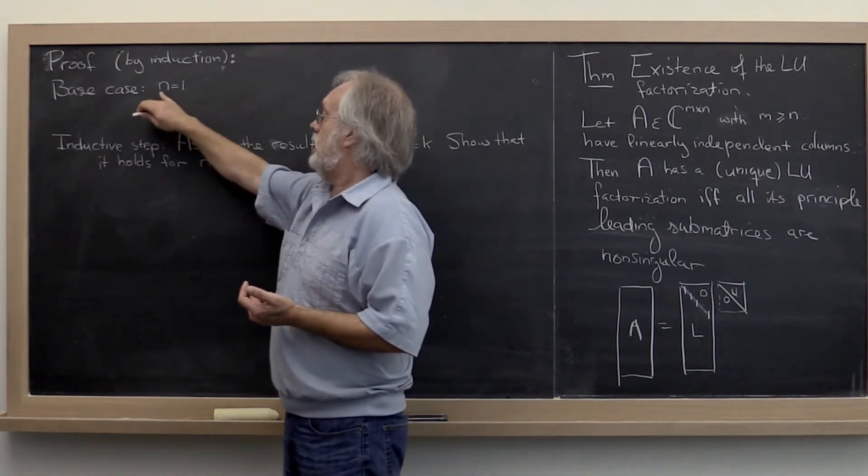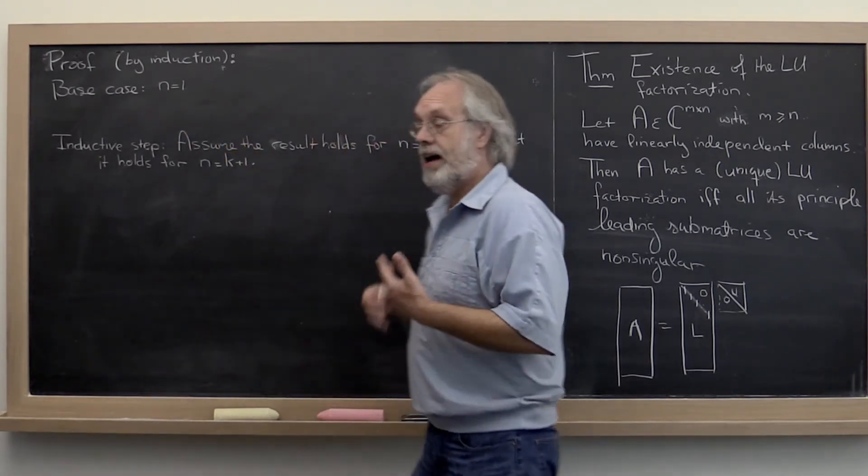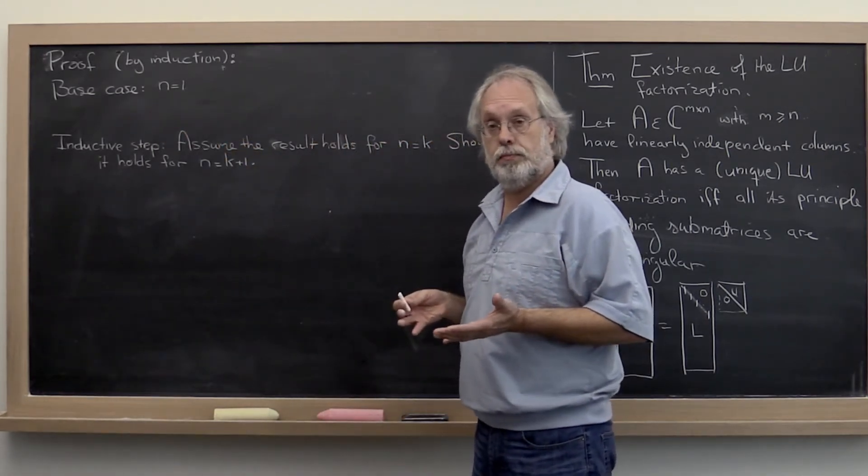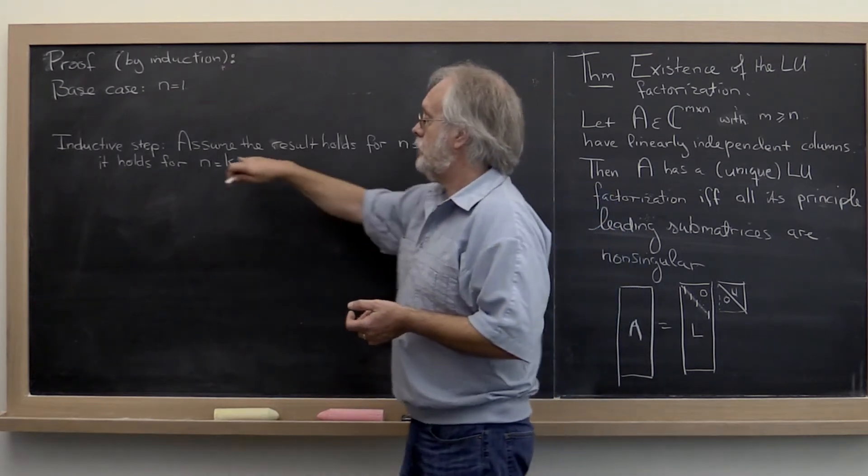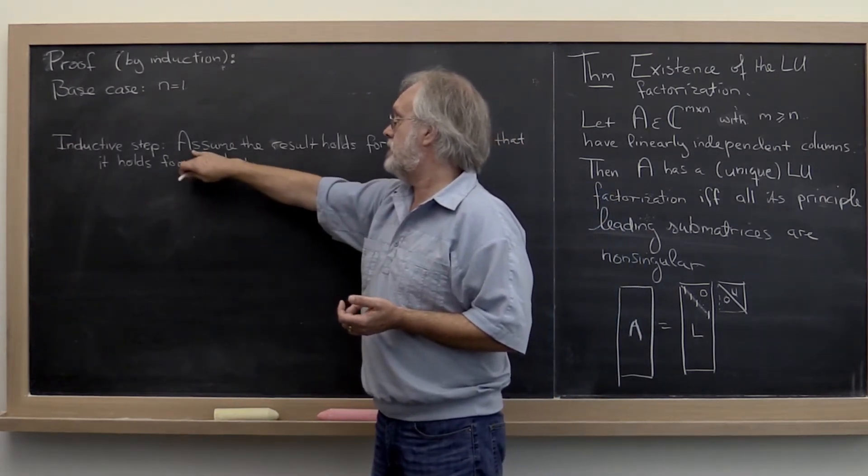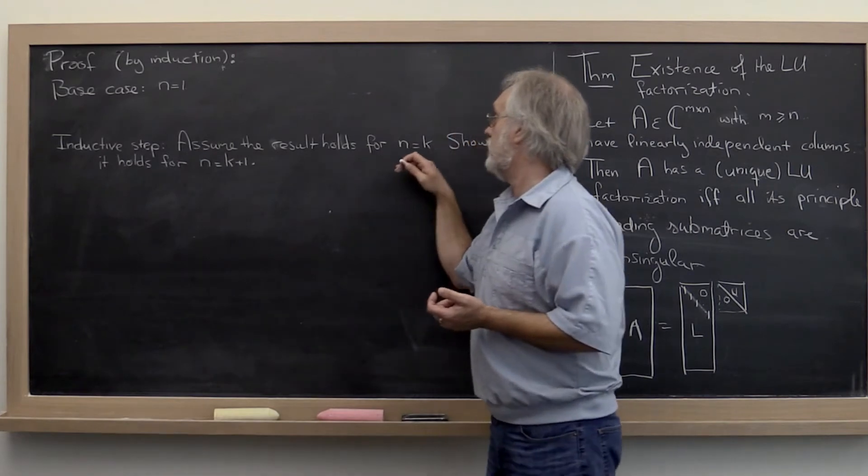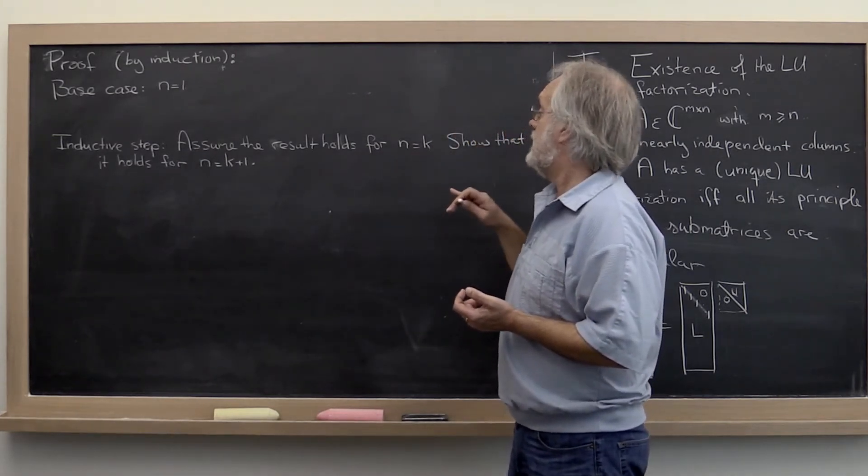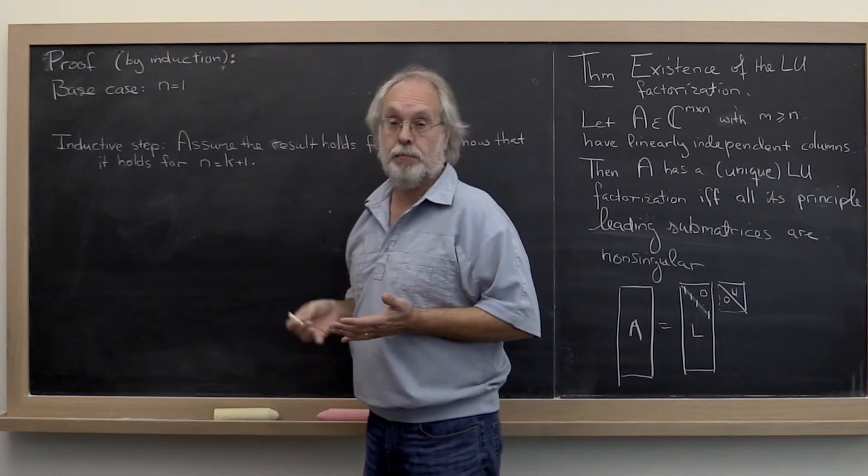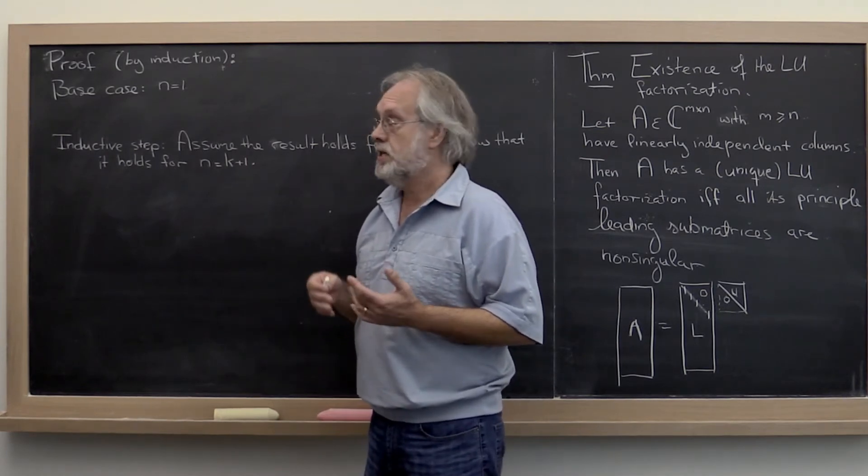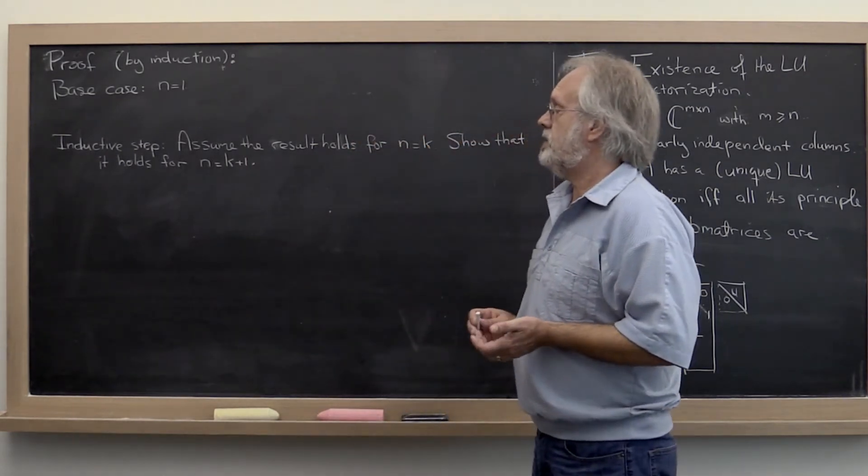Now the base case is the case where n equals 1, where A only has one column. And then you want to do an inductive step where you say assume it holds for n equals k. And then you want to show that it holds for n equals k plus 1. So let's start with the base case.